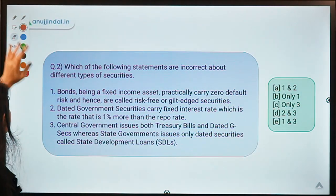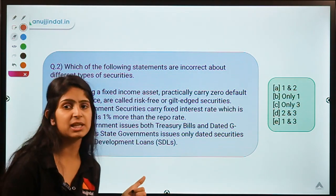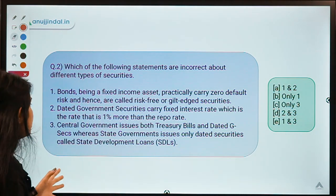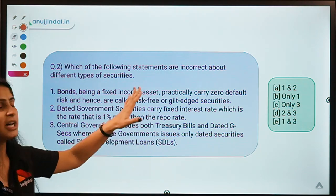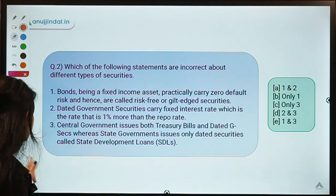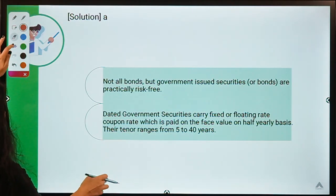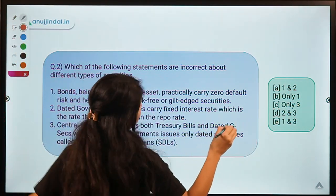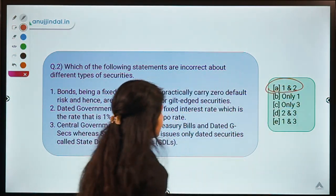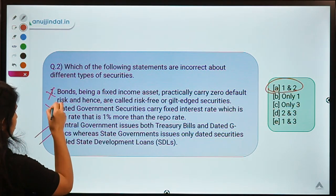Moving to question number two: which of the following statements are incorrect about different types of securities? You can pause the video to review the statements. The correct option is option A, meaning statements one and two are incorrect while the third statement is correct.